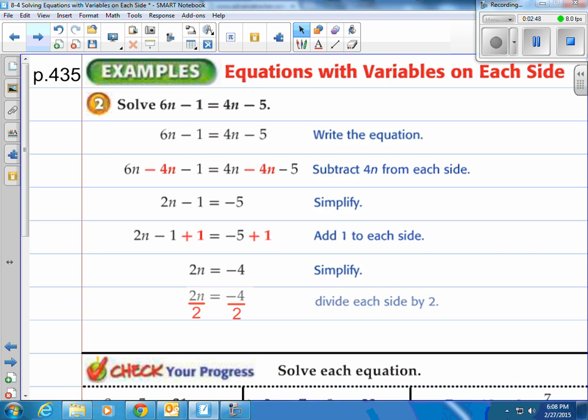Next step would be to divide away that 2, and 2 divided by 2 is 1n, so we have n left. And then on the right, of course, negative 4 divided by 2 is negative 2. So there's all the steps involved to solve that equation.